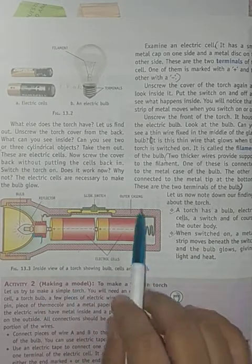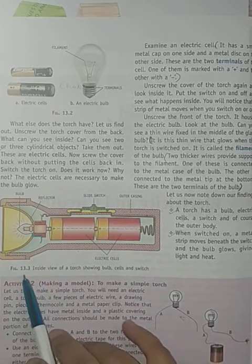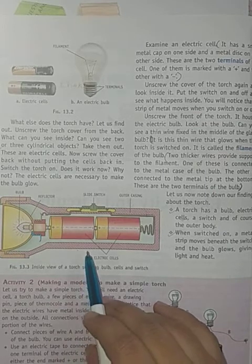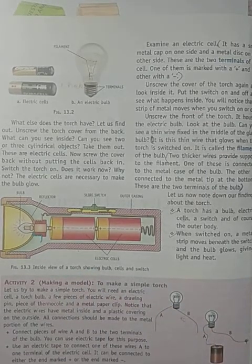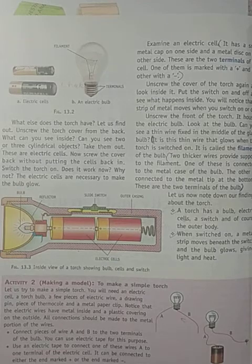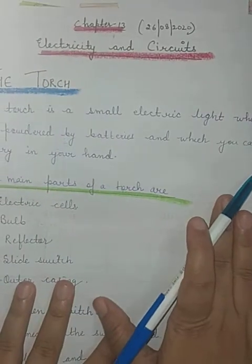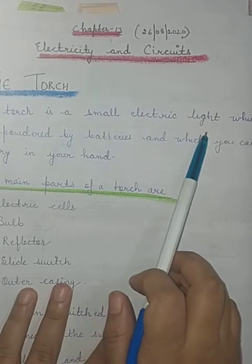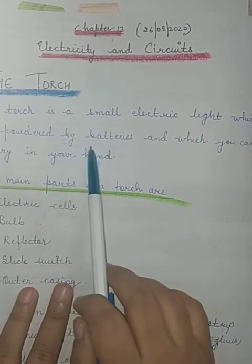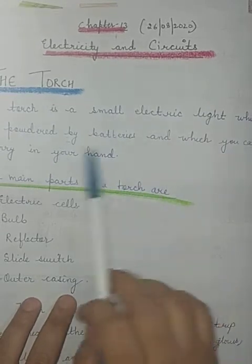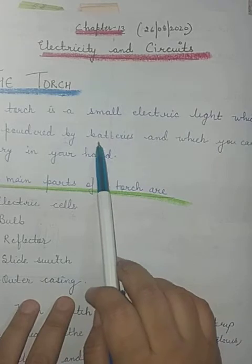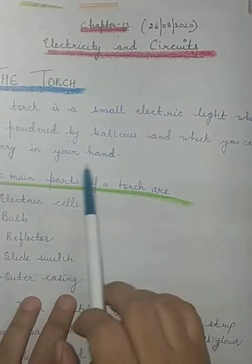Now we will discuss about the torch. You can see the simple structure of a torch in figure 13.3 on page number 152. There are basically five main parts of the torch. A torch is a small electric light which is powered by a battery and which you can carry in your hand.